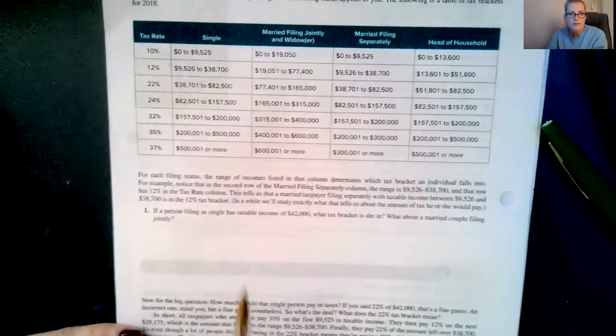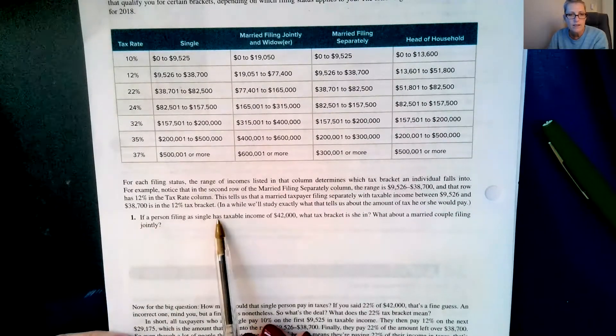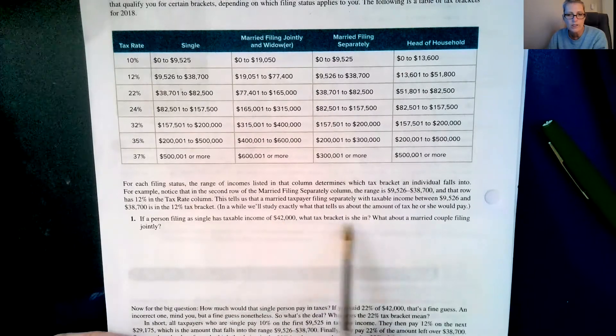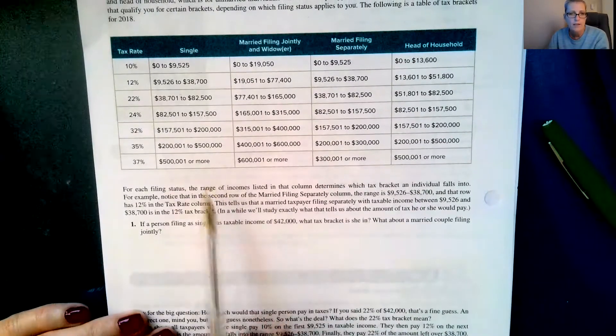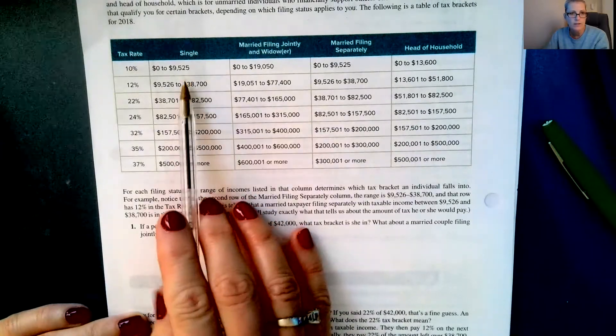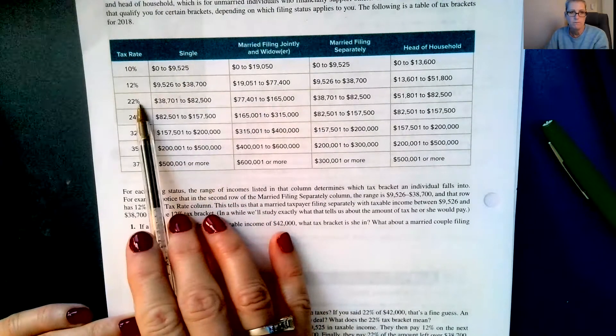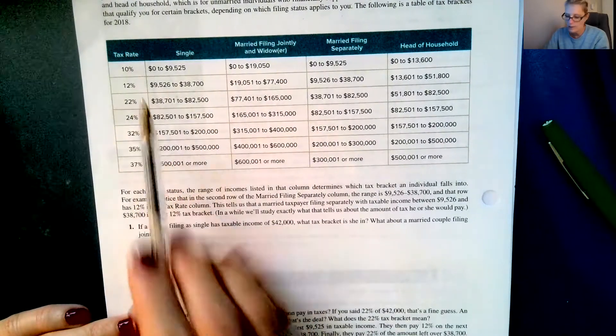This tells us that a married taxpayer filing separately with taxable income between $9,526 and $38,700 is in the 12% tax bracket. In a while we'll study exactly what this tells us. So let's just learn how to read this. Number one says if a person filing as single has taxable income of $42,000, what tax bracket is she in? $42,000 under a single would be in between these two numbers here, so this person is in the 22% tax bracket.